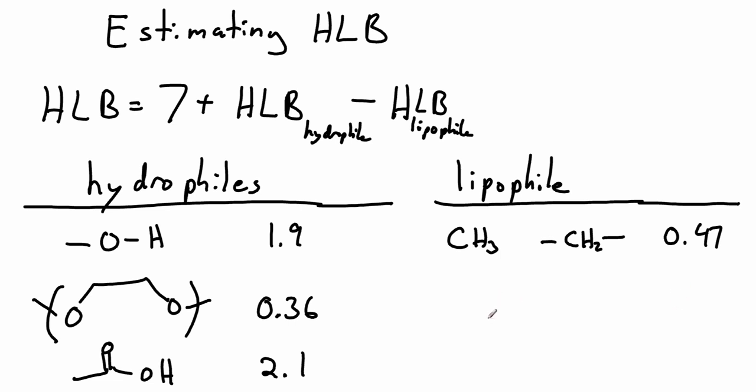Another common group you might see is a propylene glycol unit. That extra carbon turns this from being a hydrophilic group into a lipophilic group with a value of 0.11. You can imagine making maybe a block copolymer or a block oligomer where you had some propylene glycol or polypropylene glycol and polyethylene glycol. And depending upon the balance, you could have a section that was lipophilic and a section that was hydrophilic.